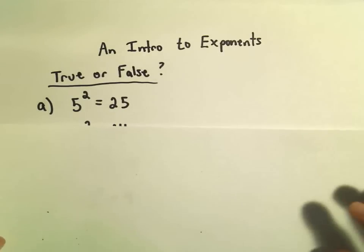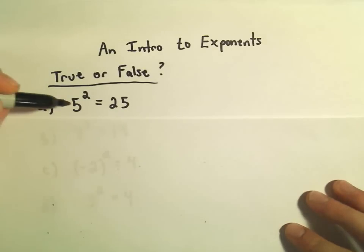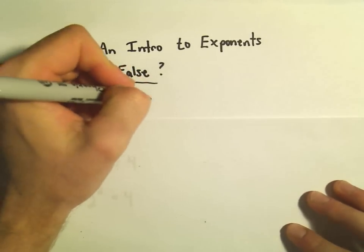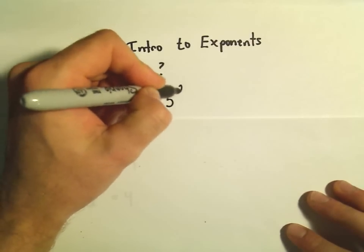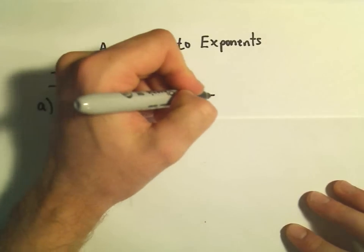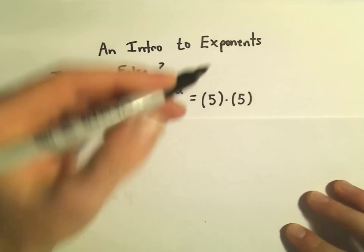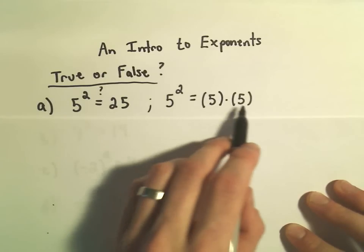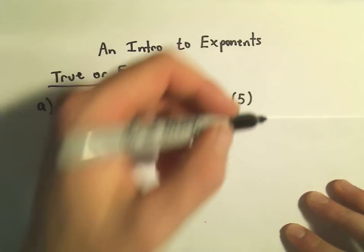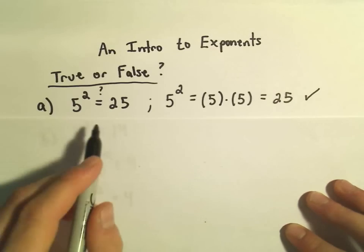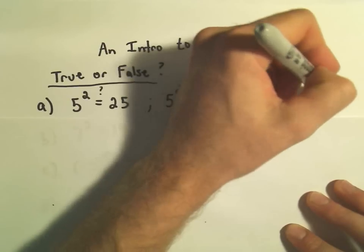Let's look at part A. Here it says 5 squared, or 5 raised to the second power equals 25, and we want to know if that's true. Remember 5 squared means we take the number 5 times 5, and since the exponent is 2, we multiply 2 of them total. 5 times 5 is 25, so that first statement is definitely true.